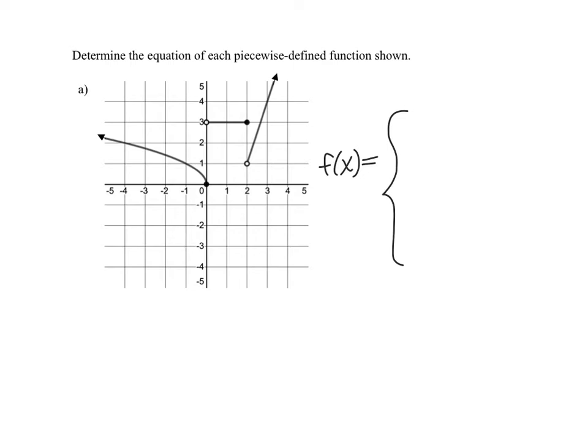Starting from left to right, the first piece — I'll label it number one — is the first function we're trying to write the equation for. Looking at the shape of this graph, we can see that this is a square root function. Let me think about what the square root of x function looks like typically, and then we'll compare that with the function we have graphed.